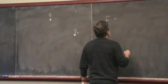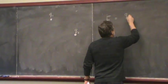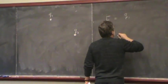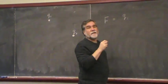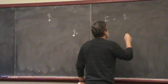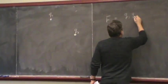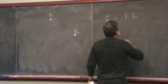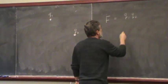in Gaussian units, in CGS units, the magnitude of charge 1 measured in electrostatic units, times the magnitude of charge 2 in electrostatic units.